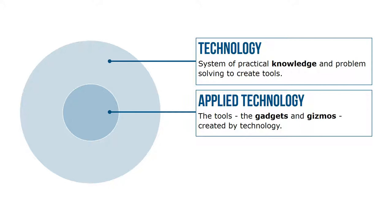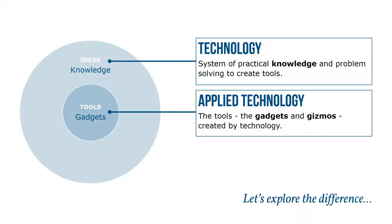Let's explore the difference between technology and applied technology with a couple of examples. Remember, technology is a system of practical knowledge — think of technology as the ideas. Applied technology, on the other hand, are the gadgets or gizmos created by technology — think of applied technology as the tools.